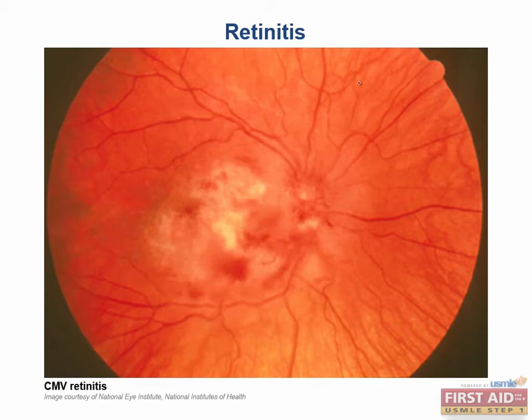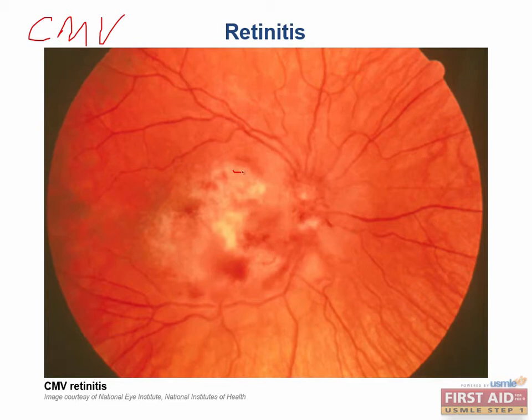Retinitis is simply an infection of the retina. The most common cause of retinitis is CMV infection, and this typically occurs in immunocompromised patients. On the fundoscopic exam, you can see inflammation which can manifest as cotton wool, exudates, and retinal hemorrhages.